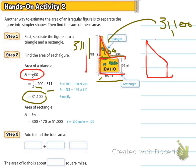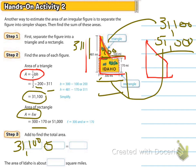For the area of the rectangle, it's just going to be length times width or base times height. We need to write that down. It's going to be 300 by 170. So we do 300 times 170, which is 51,000. So that part is 51,000. To find the total area, we're going to take our 31,100 and our 51,000 and add them together to get 82,100. So the area of Idaho is approximately 82,100 square miles.